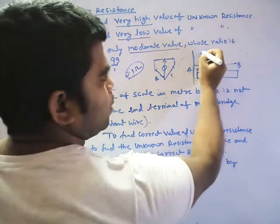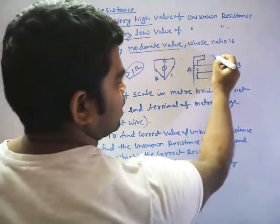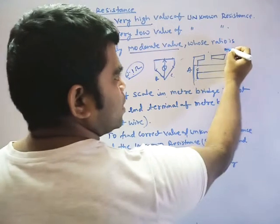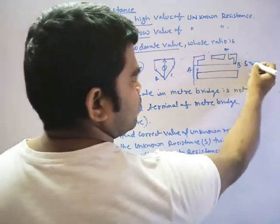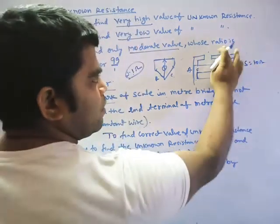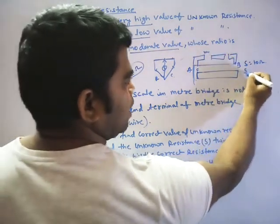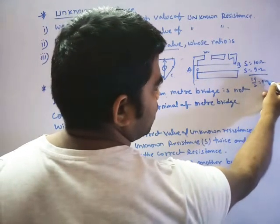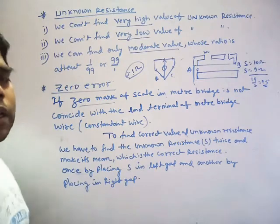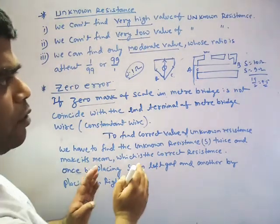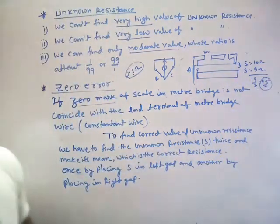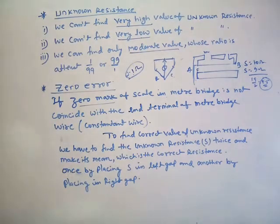How to correct it? Unknown resistance - there are two gaps. You have seen that metal strip in this way. You have two gaps, right and left. So once we have to keep the unknown resistance in the right gap, suppose 10 ohm. And after that, I will place it in the left gap and then find suppose 9 ohm. And now find its mean. 19 by 2 is 9.5. So this is the real answer. The mean will give you the real answer.